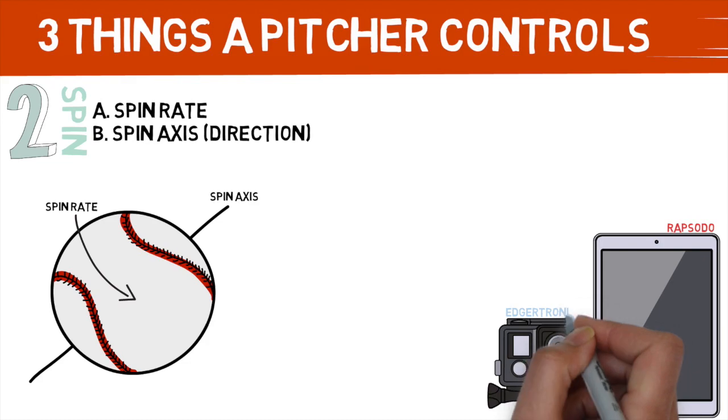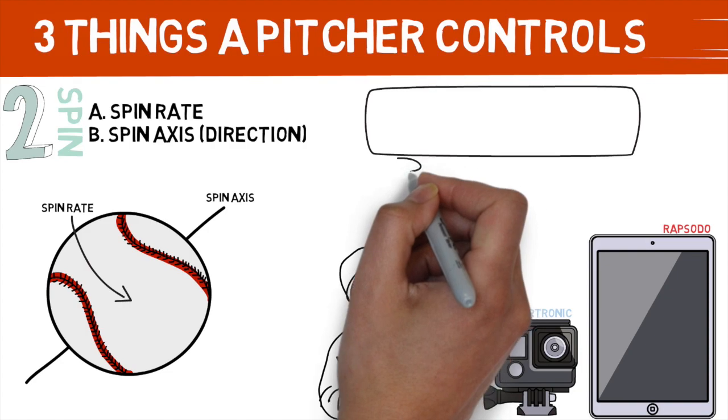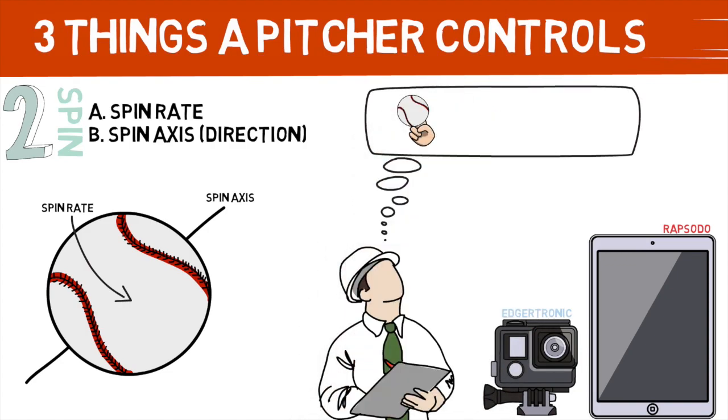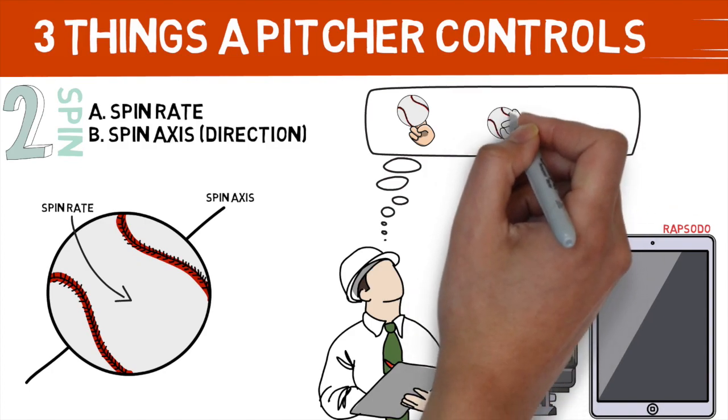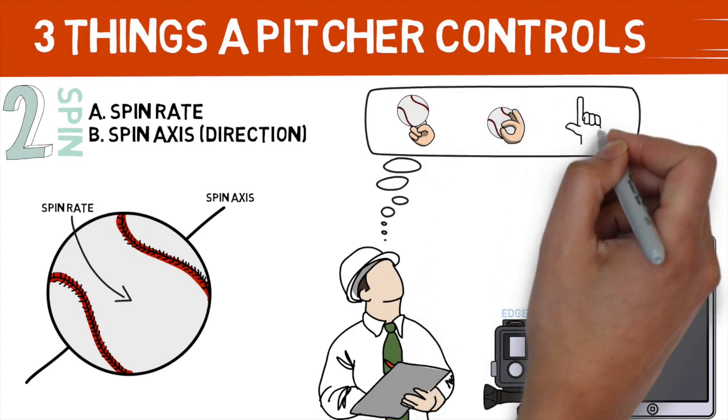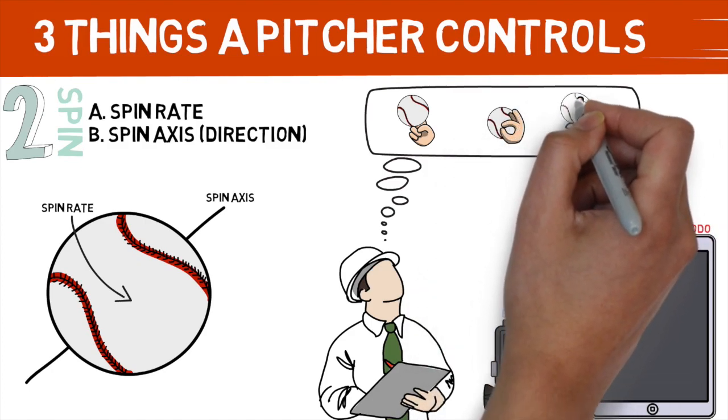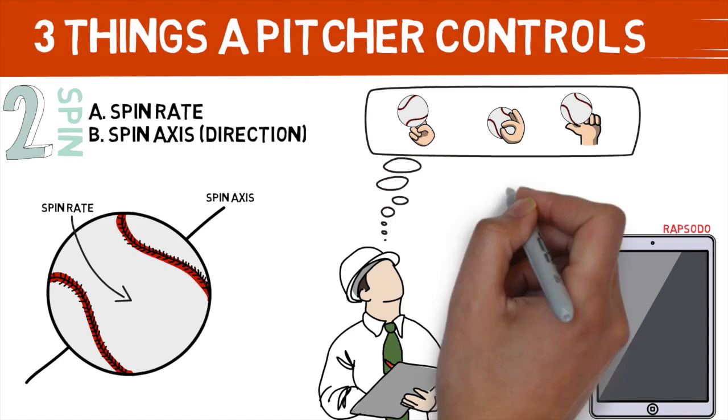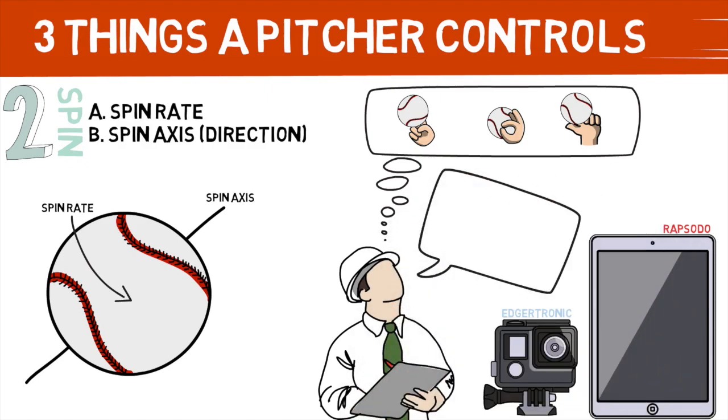Once you have determined how you would like your pitch to move, you need to manipulate these factors to actually make it happen. Here you have to put on your thinking cap and imagine what different grips, pressure points, hand and wrist positioning will give you the outcome you desire. How would this come off of the hand? What if we rotated the ball like this? And then you have to try to come up with a way to get the athlete to actually do them.